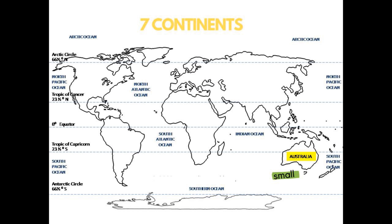The next one is Australia. It's the smallest continent on Earth. It comes under the Southern Hemisphere and is surrounded by water on all sides. Therefore, it is said as the island continent.